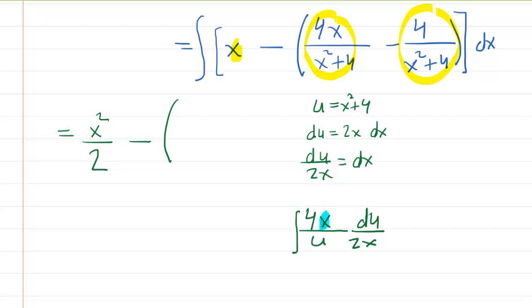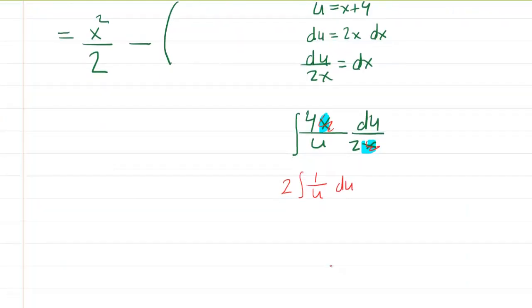What's nice here is the x's will cancel each other out. And then you have 4 divided by 2, which of course is 2, and that can be factored out. So you'll basically have 2 times the integral of 1 over u, du. Notice the u is in the denominator, so that's why we're saying 1 over u.